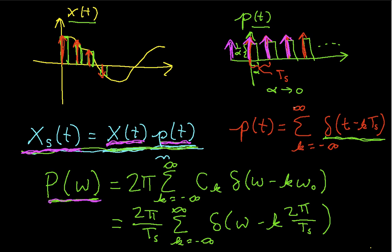Then we found the Fourier transform of P of t, and we discovered that it too is a train of impulses. So in P of t, the impulses are separated by t sub s seconds. In P of omega, the impulses are separated by two pi over t sub s. So the impulses are separated by the radial version of the sampling frequency.